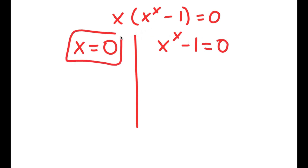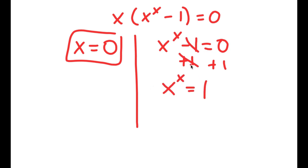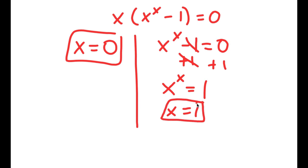x equals 0 is already a solution. For x to the power of x minus 1 equals 0, I add 1 to both sides to get x to the power of x equals 1. Since x equals 1 gives 1 to the power of 1 equals 1, x equals 1 is the only solution to this equation.